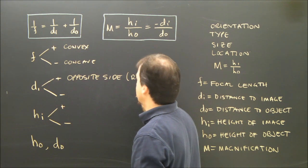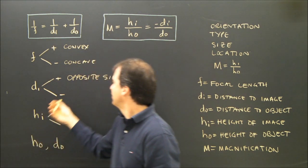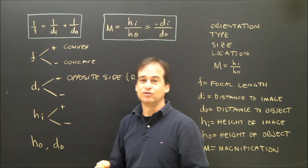And by the way, if it's on the opposite side of the lens, then it's going to be real. So with lenses, if you get a positive answer for DI, you also know it's real.